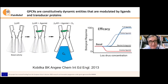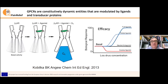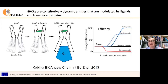GPCRs are dynamic entities. They have constitutive activity through an active conformation, stabilized by agonists and the G-protein. These receptors present a basal response in the absence of ligands. This effect is increased by agonists and decreased by inverse agonists. We can see this in the typical pharmacological plot of the variation of the biological response with the concentration of a particular drug in logarithmic units.